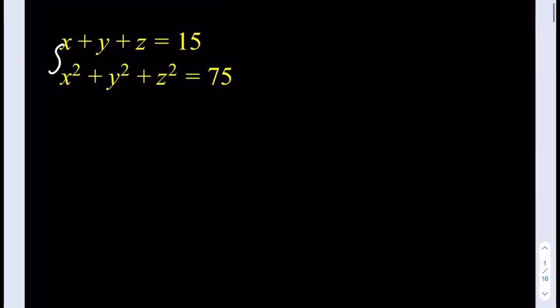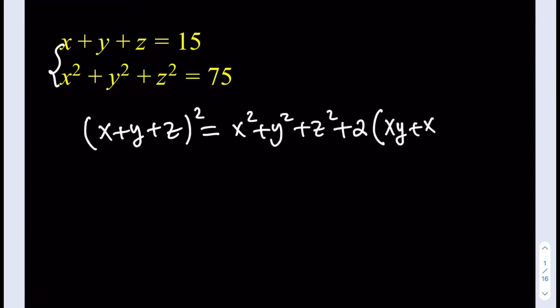So I can just go ahead and take advantage of the identity, which is x plus y plus z squared. Let's go ahead and expand. That's going to give me x squared plus y squared plus z squared plus two times the quantity xy plus xz plus yz.